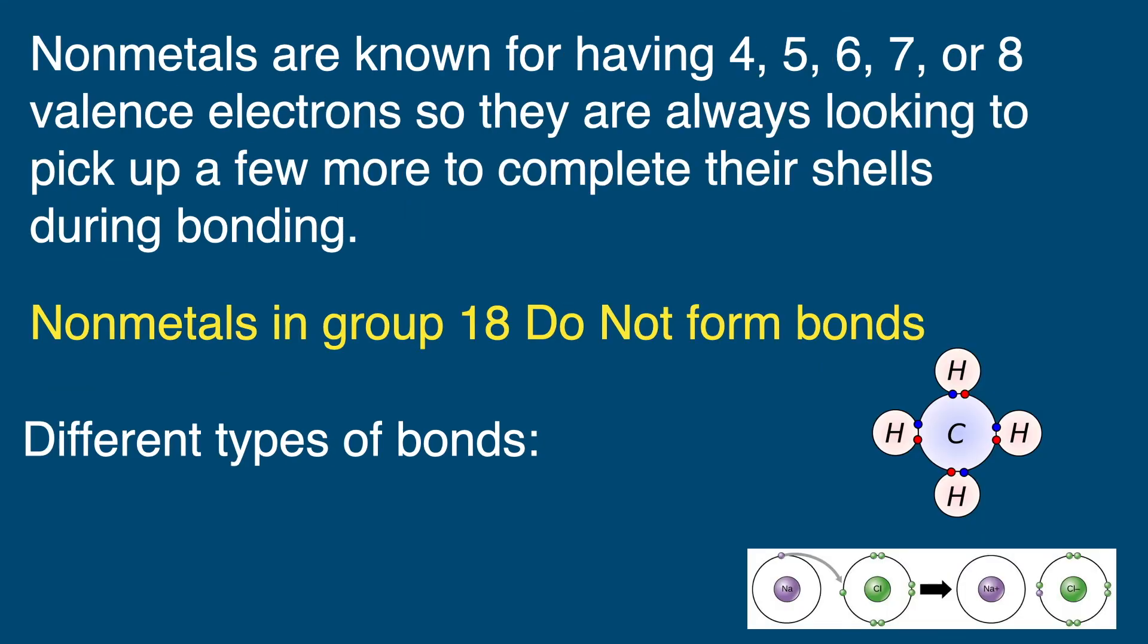Now non-metals are known for having four, five, six, seven, or even eight valence electrons. So they're always looking to pick up a few more to complete their shells during bonding. Now non-metals in group 18 do not form bonds, and that is because their outer electron shells are already complete.